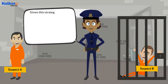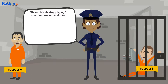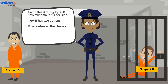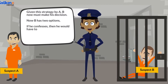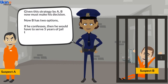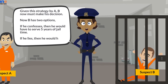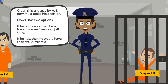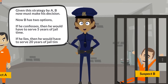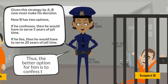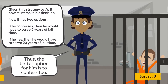Given this strategy by A, B now must make his decision. B has two options: if he confesses, then he would have to serve 5 years of jail time, and if he lies, he would have to serve 20 years of jail time. Thus, the better option for him is to confess too.